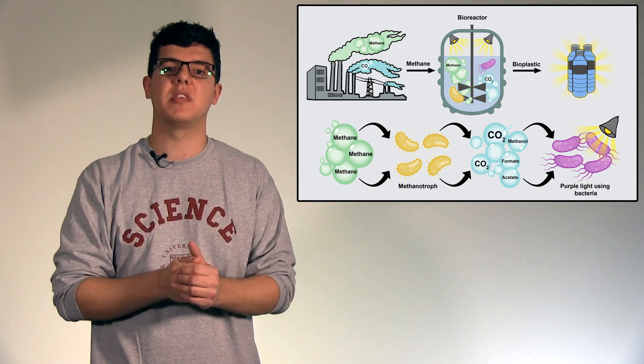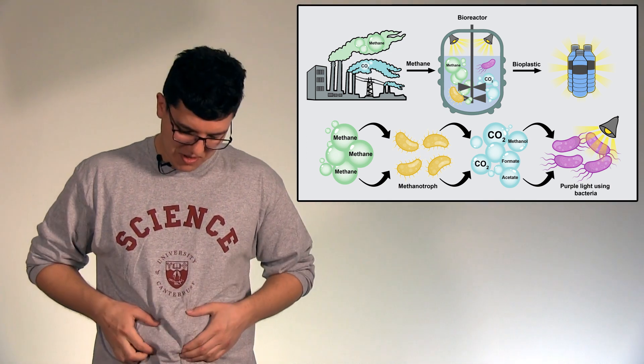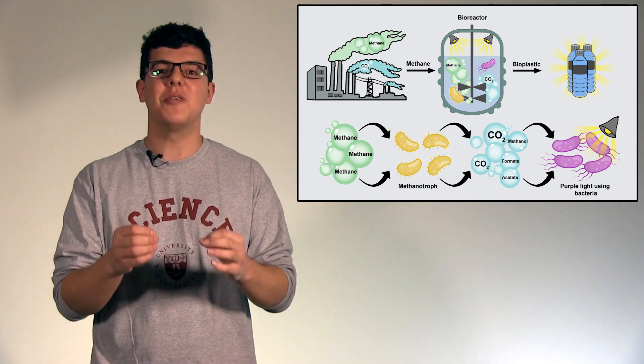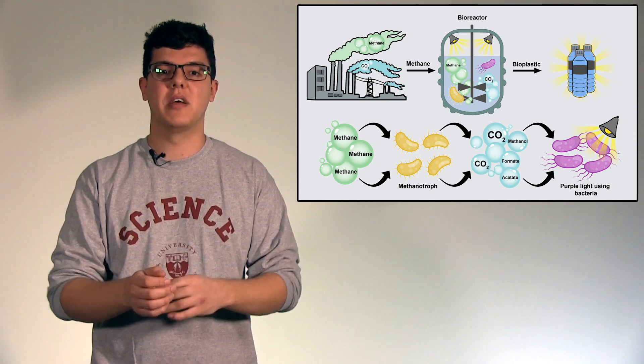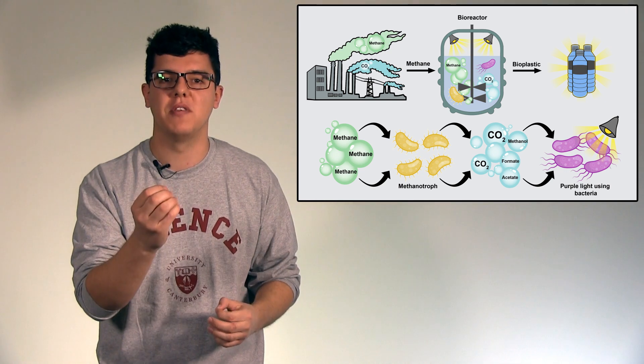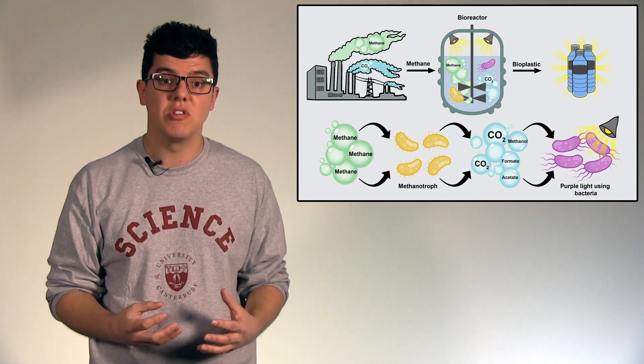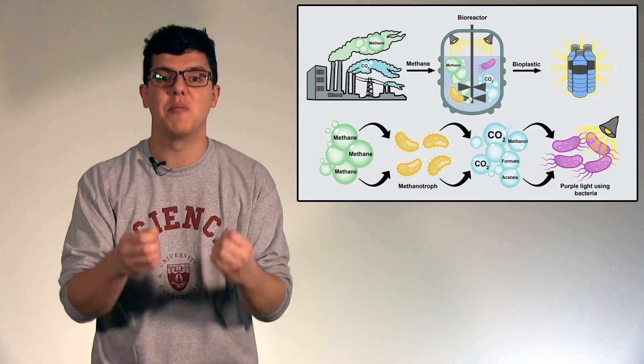But they have another trick up their sleeve. Just as us humans have fat stores, so do the purple light using bacteria. But instead of fat they store a special kind of nutrients, and we can use these nutrients to make biodegradable plastics.